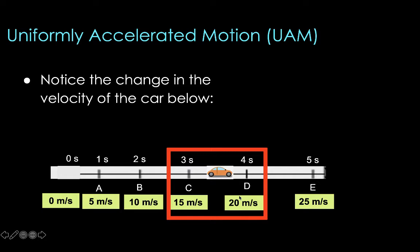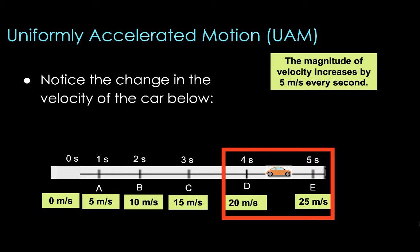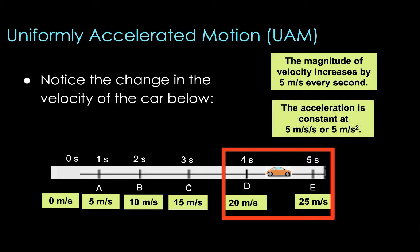Going forward from point C to point D, it once again speeds up by five meters per second — from 15, the velocity becomes 20 meters per second eastward, also within a one-second time interval. From point D to point E, it speeds up from 20 meters per second to 25 meters per second — another five meters per second increase within one second. So the magnitude of velocity increases by five meters per second every second. The acceleration of the car is constant at five meters per second squared.